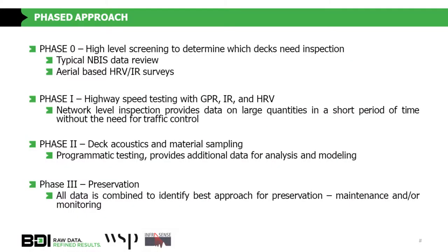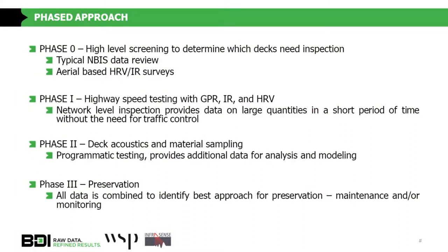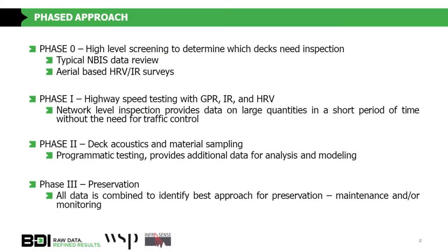We use a phased approach. Phase one is very high-level screening — reviewing MBIS data, identifying how old structures are, when they were last maintained. We can do aerial-based infrared and cover entire corridors in days to identify a high-level screening. Then we get into infrared, GPR, and HRV, which we can do at network level or quickly on signature structures without interrupting traffic. Phase two and three involve actual data collection on deck — sounding, material samples, chlorides. Then we get to preservation, whether traditional or some type of monitoring.